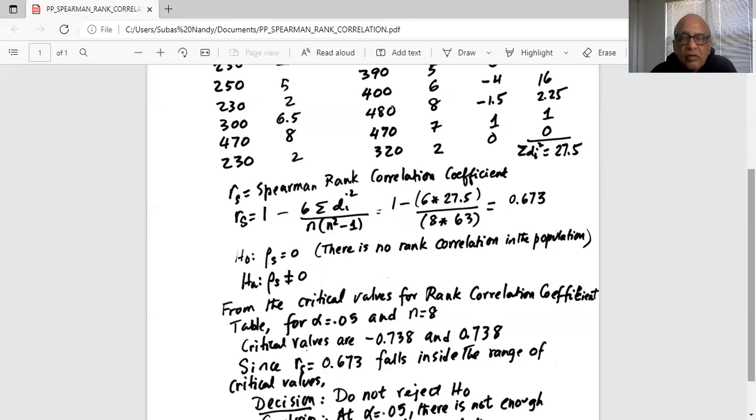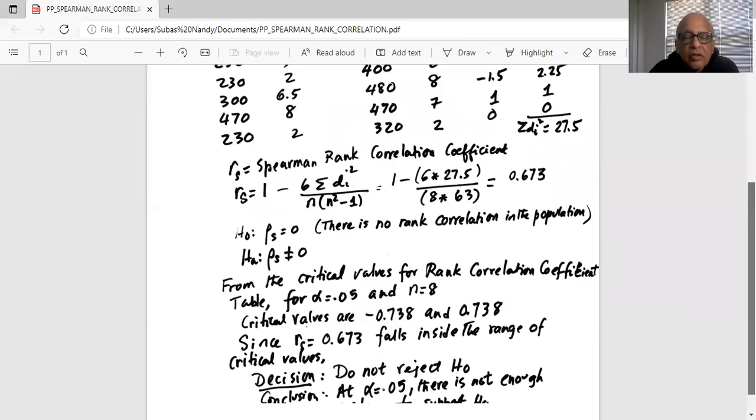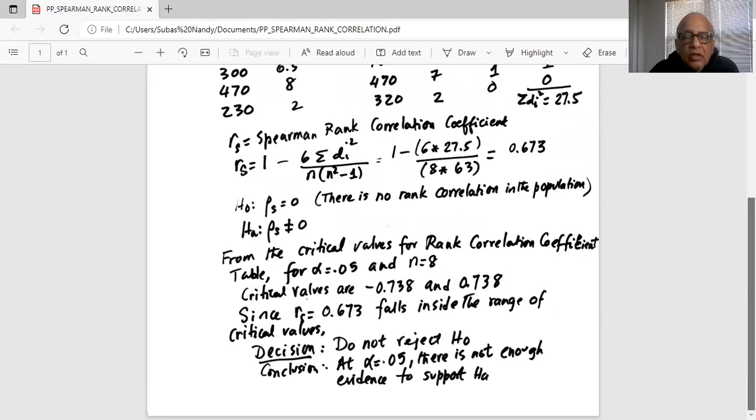Now notice our RS calculation, calculated RS value from the sample data 0.673 falls between minus 0.738 and 0.738. Therefore, decision do not reject H0. And the conclusion is at alpha equal to 0.05, there is not enough evidence to support HA.